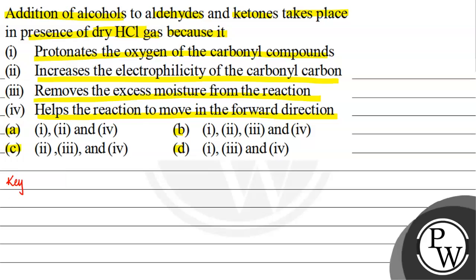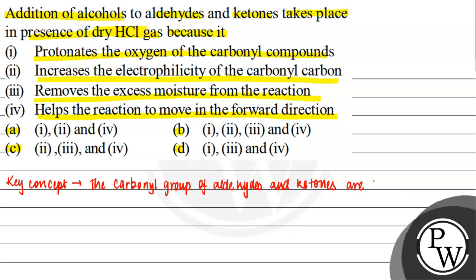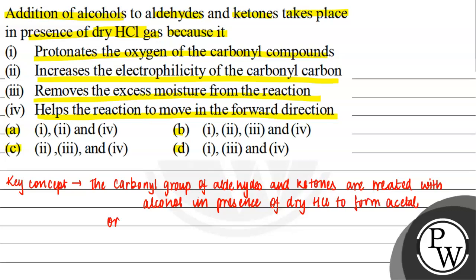Let us write the key concept of the question. The carbonyl group of aldehydes and ketones are treated with alcohol in the presence of dry HCl to form acetal or ketal respectively. In the case of aldehydes, when it reacts with alcohol, it forms an acetal, and in the case of ketones, it forms a ketal.